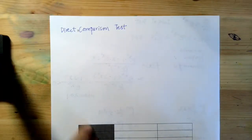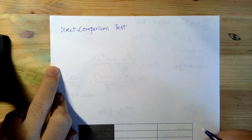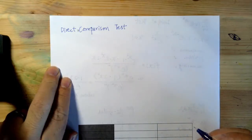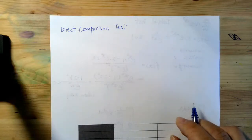Okay, so now let us talk about the direct comparison test. It's a very useful test to check whether a series is convergent or divergent.